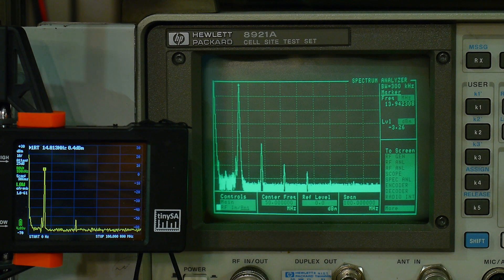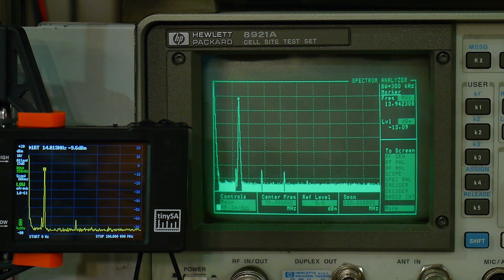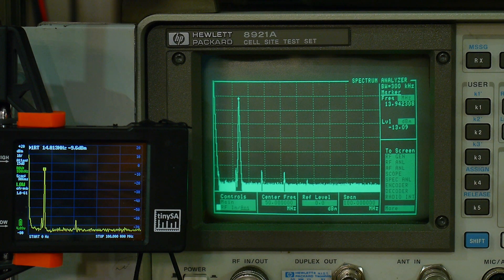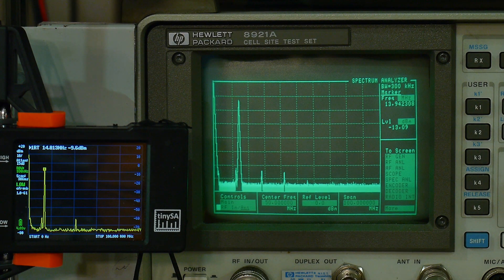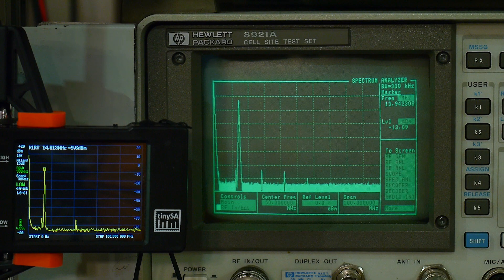So let's drop it down 10 dB. And we can see the harmonics have dropped down. We still have a harmonic on the Tiny SA. So that's at minus 10 level.